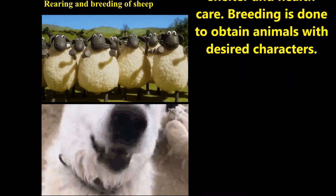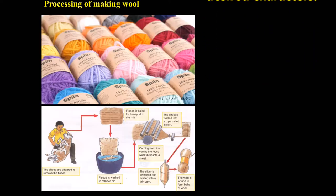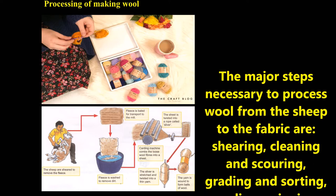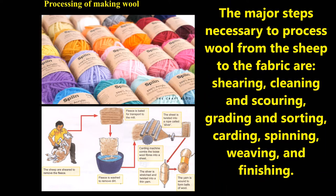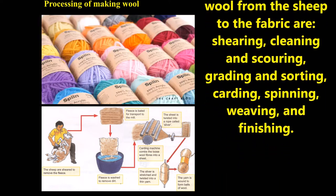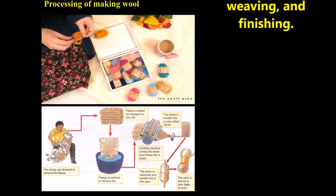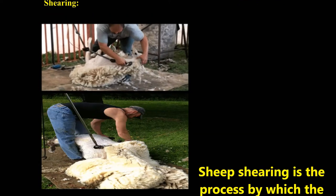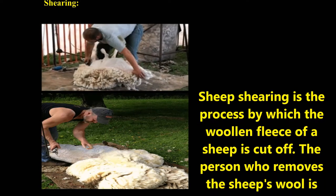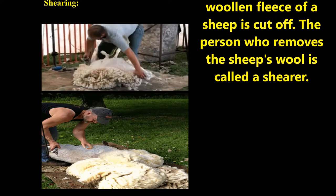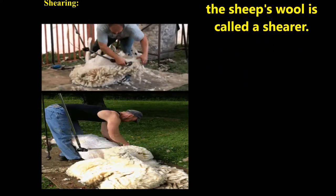The major steps to process wool from sheep to fabric are: shearing, cleaning and scouring, grading and sorting, carding, spinning, weaving, and finishing. Shearing is the process by which the woolen fleece of a sheep is cut off. The person who removes the sheep's wool is called a shearer.